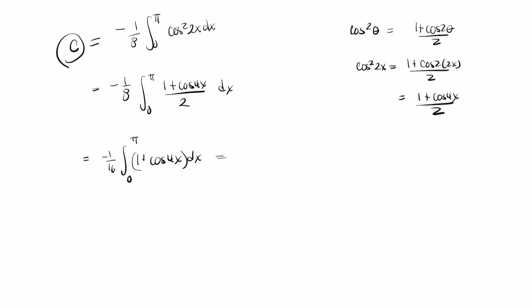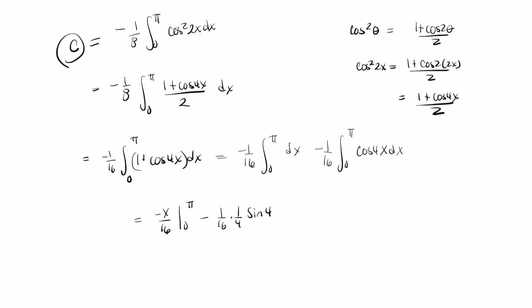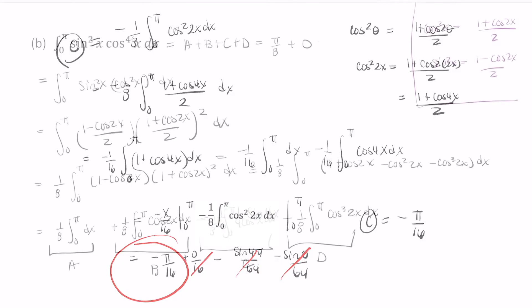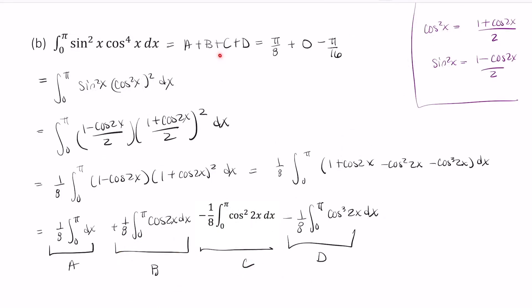Splitting into two integrals: negative 1 over 16 times the integral from 0 to pi dx, minus 1 over 16 times the integral from 0 to pi of cosine 4x dx. The first is just negative x over 16 from 0 to pi. The second requires a substitution and works out to negative 1 over 16 times 1 over 4 times sine of 4x, from 0 to pi. The only nonzero term is negative pi over 16, so integral c equals negative pi over 16.